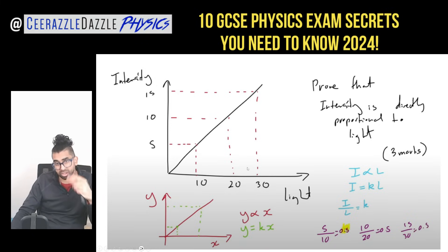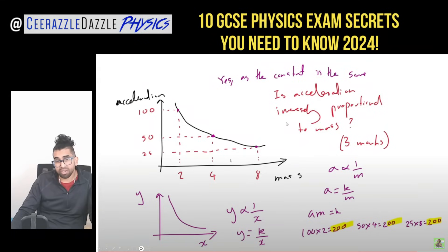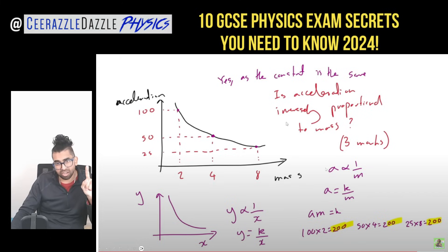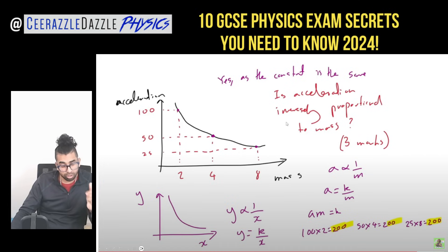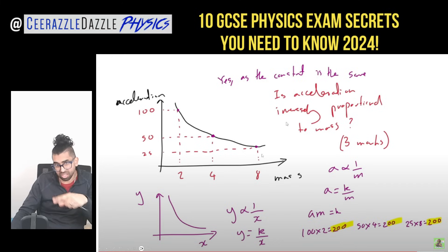For inverse proportionality — for example, a graph of acceleration vs. mass — acceleration is inversely proportional to mass, so you find the constant by multiplying acceleration by mass at different points. The constant should be the same each time: 200, 200, 200. This confirms inverse proportionality. A linked video walks through this in more detail.